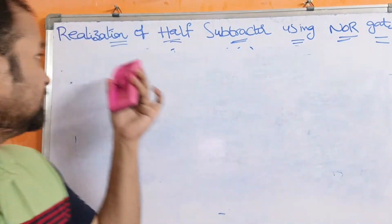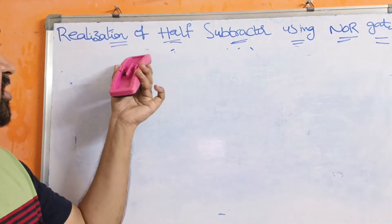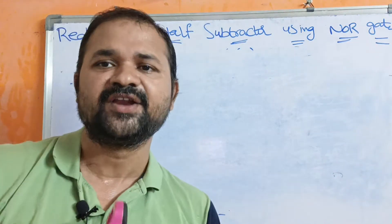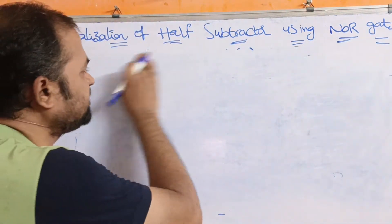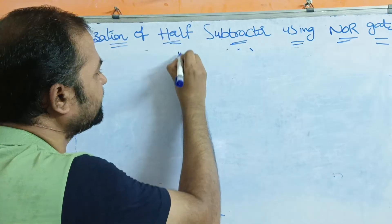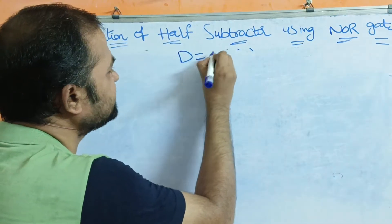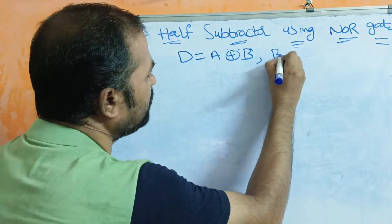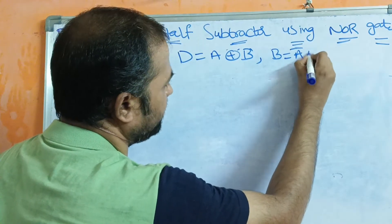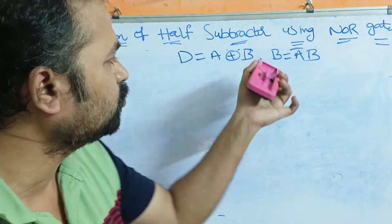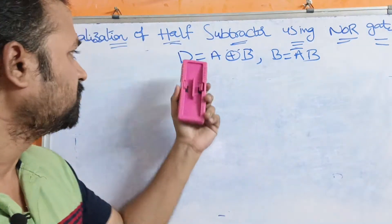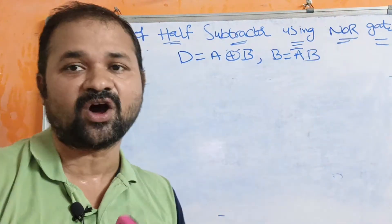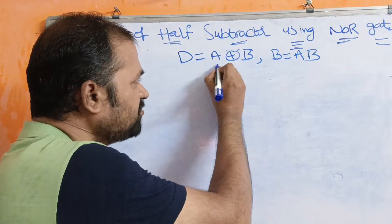Let us discuss the realization of a half subtractor using NOR gates. We know the expressions in a half subtractor: Difference is equal to A XOR B, and borrow-out (B_out) is equal to A-bar·B. We now need to design the circuit for the difference and the borrow using NOR gates. First, let us focus on the difference.